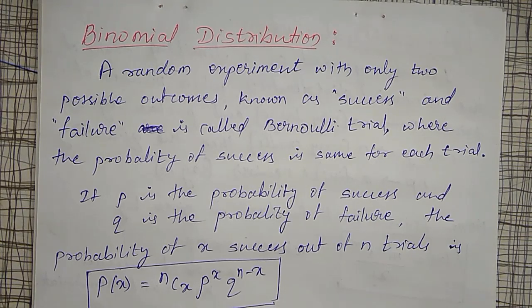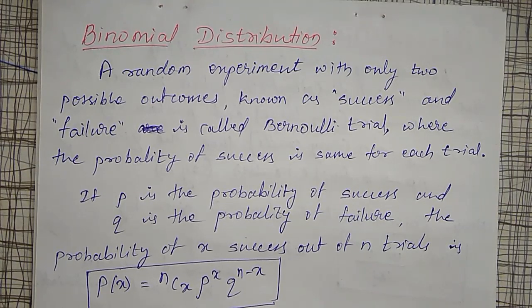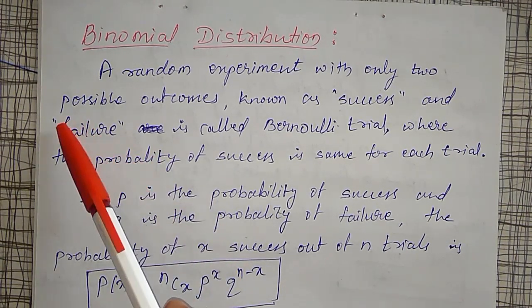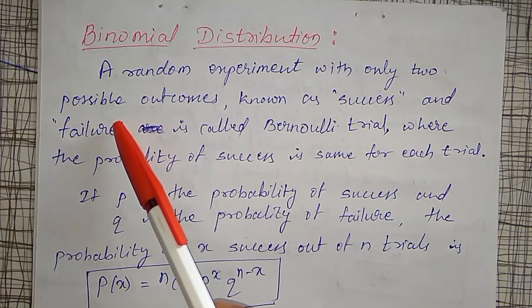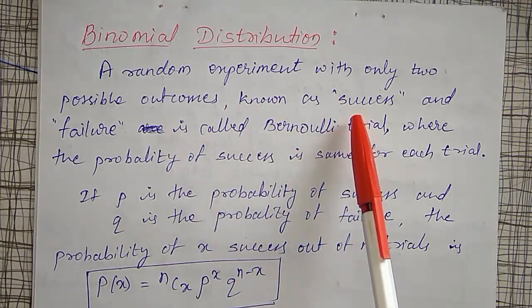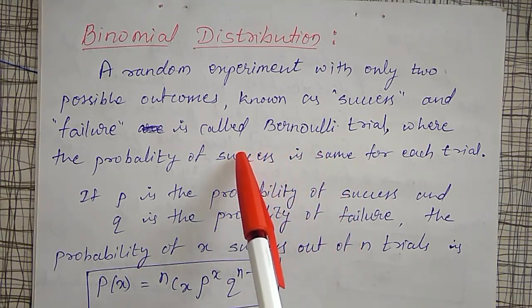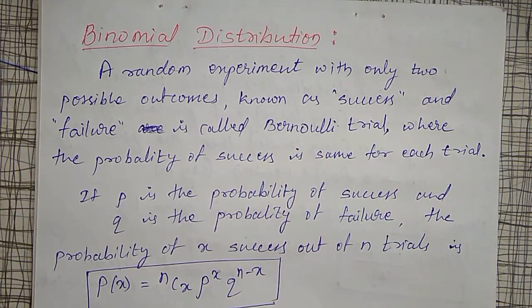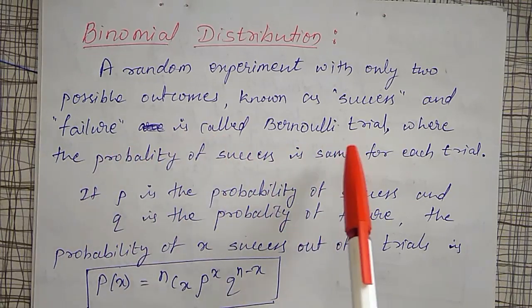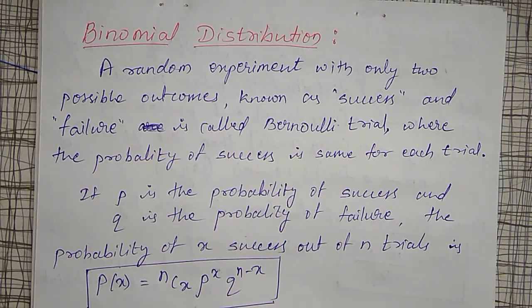For the binomial distribution, consider a random experiment where for each trial there are only two types of outcomes — success or failure. Such trials, where each trial has only two possible outcomes of success and failure, are known as Bernoulli trials.